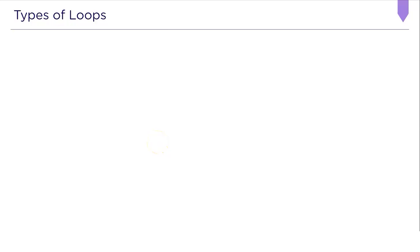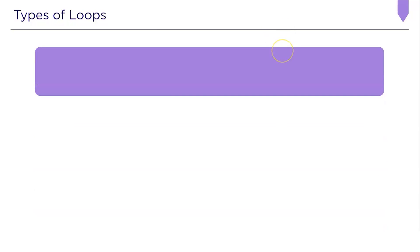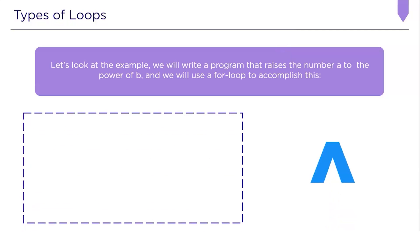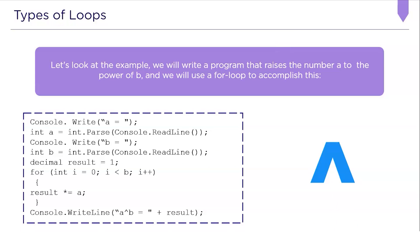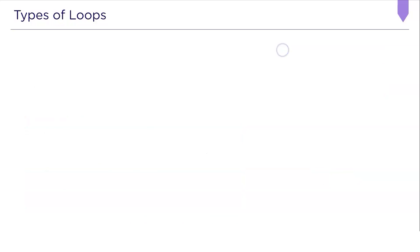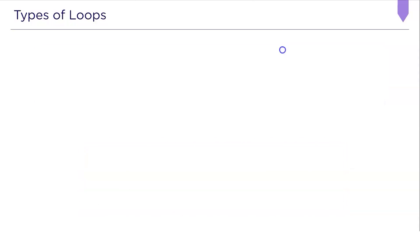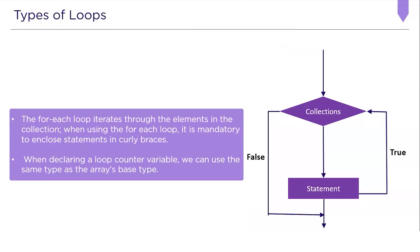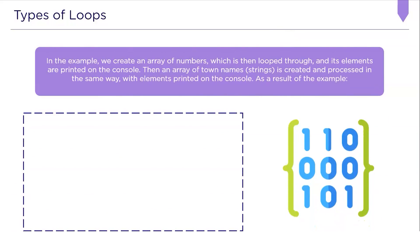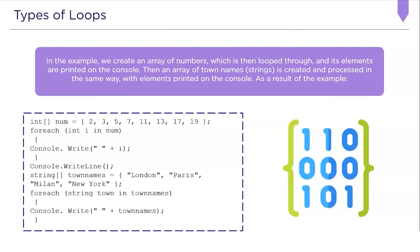Following that, we have the for-each loop. The for-each loop in C-sharp iterates through a collection of items, such as an array or a list. When executed, it runs a block of code on each item in the collection, passing through and displaying them one by one. The syntax uses the for-each keyword, followed by the type of variable in the collection, then the code for execution inside the braces. It is mandatory to enclose statements in curly braces when using a for-each loop.